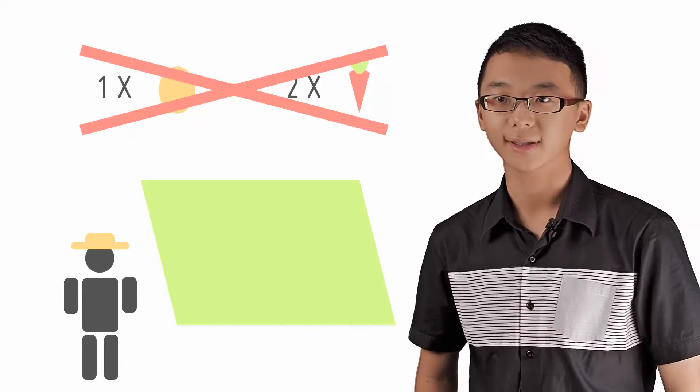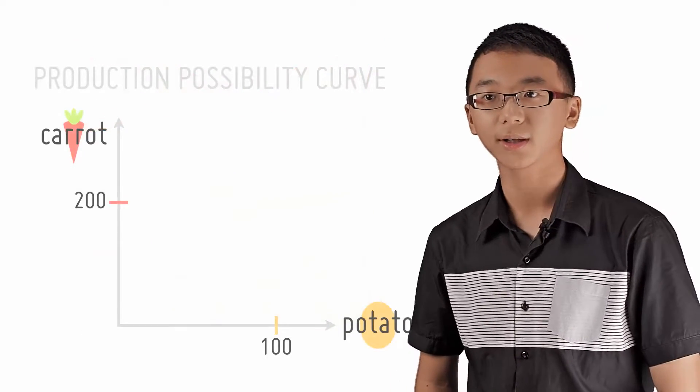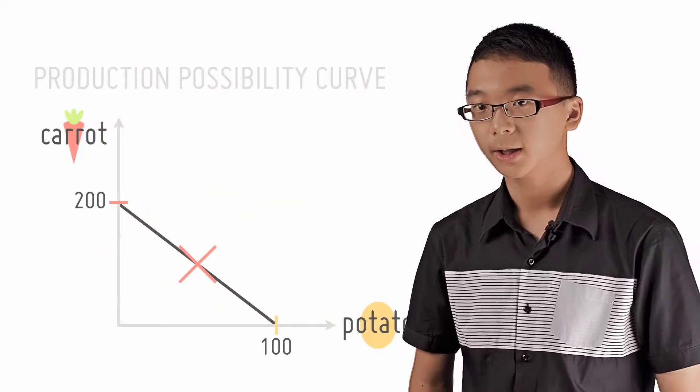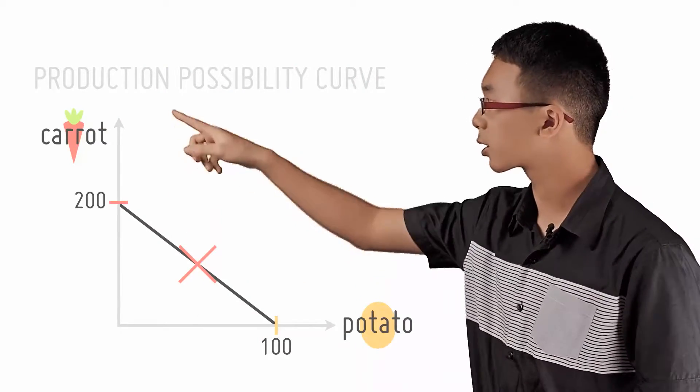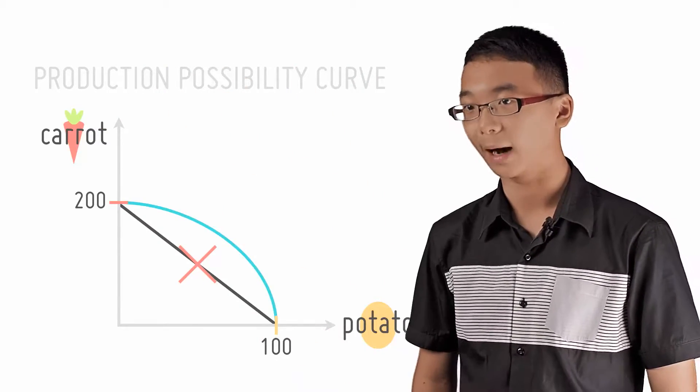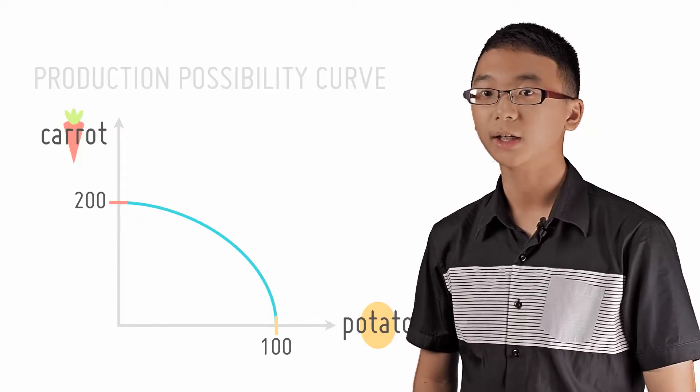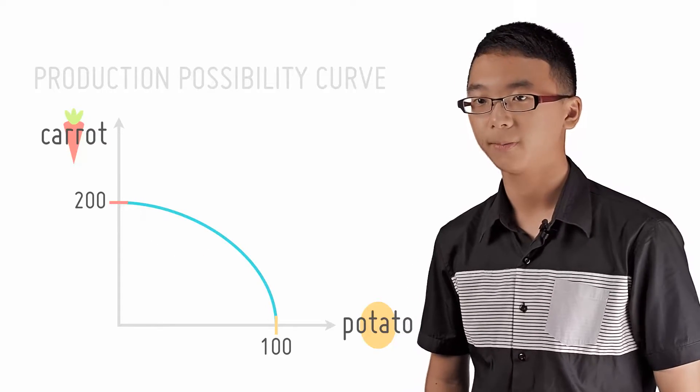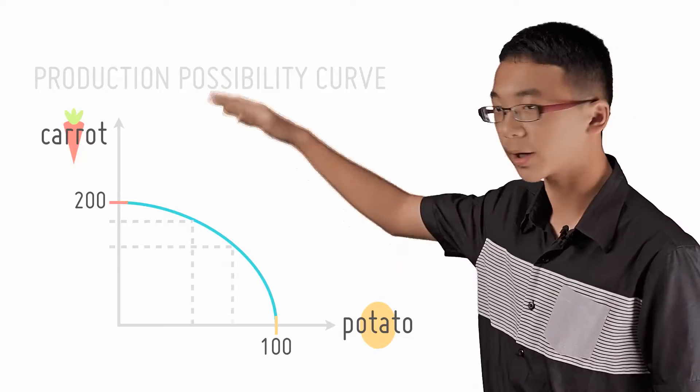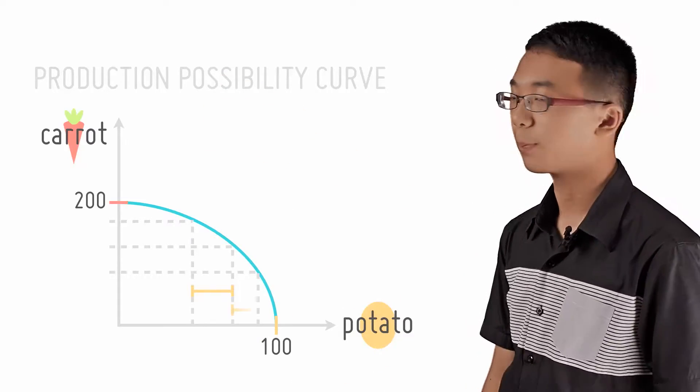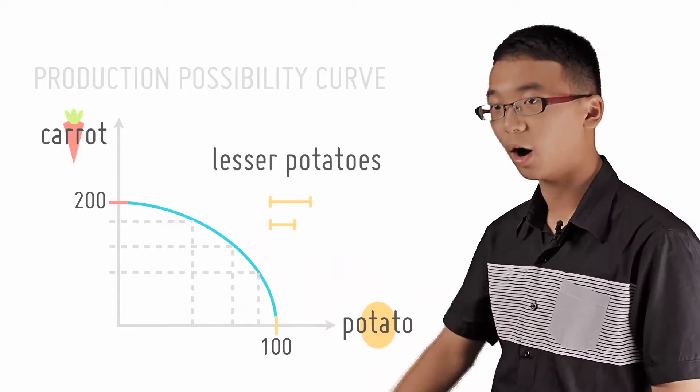The main thing here to note is that opportunity cost does not have to be constant. In this case, the curve is convex or outward bowing, and it indicates increasing opportunity cost. As I produce more carrots, I am producing a proportionally lower number of potatoes.